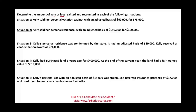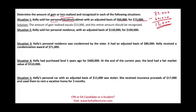Starting with the first situation: Kelly sold her personal vacation cabin with an adjusted basis of $60,473. The realized gain is the amount realized minus the adjusted basis, equal to $13,000. Is this amount recognized? Yes. This is a personal vacation cabin, not a personal residence. Therefore, the $13,000 is recognized — meaning it is taxable.